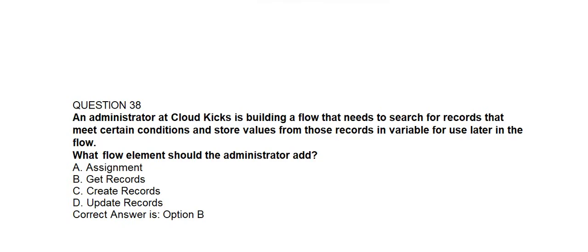Question number thirty-eight. An administrator at Cloud Kicks is building a flow that needs to search for records that meet certain conditions and store values from those records in variables for use later in the flow. What flow element should the administrator add? Option A: Assignment. Option B: Get Records. Option C: Create Records. Option D: Update Records. Correct answer is Option B: Get Records.